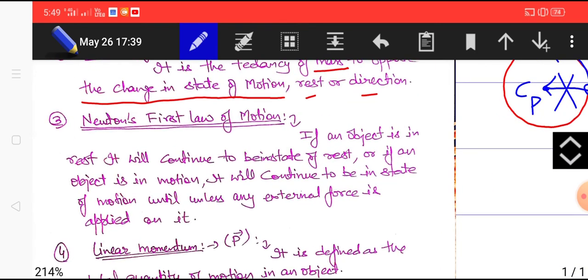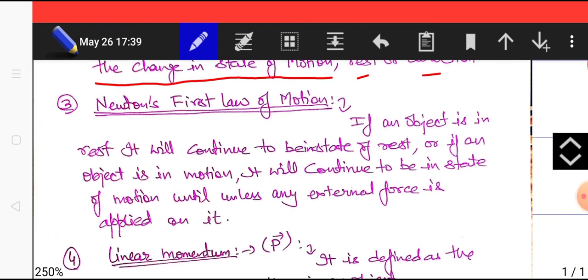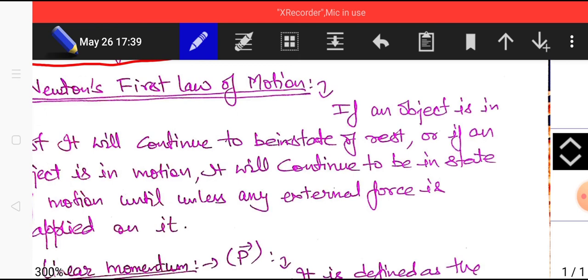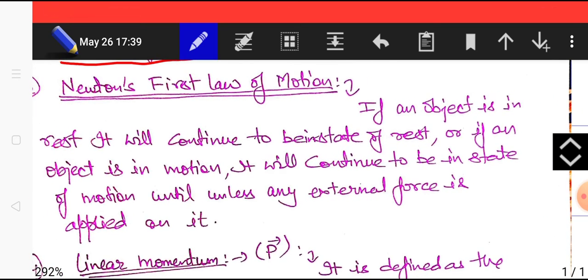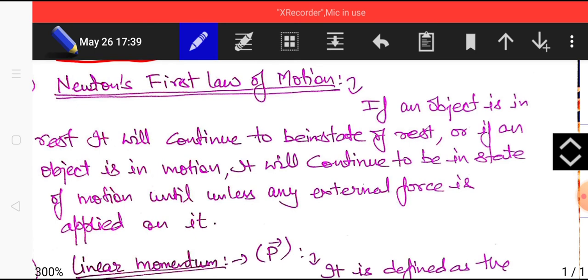Now what is Newton's first law of motion? Newton's first law of motion states that if an object is in rest it will continue to be in rest or if an object is in motion it will continue to be in state of motion unless any external force is applied on it.